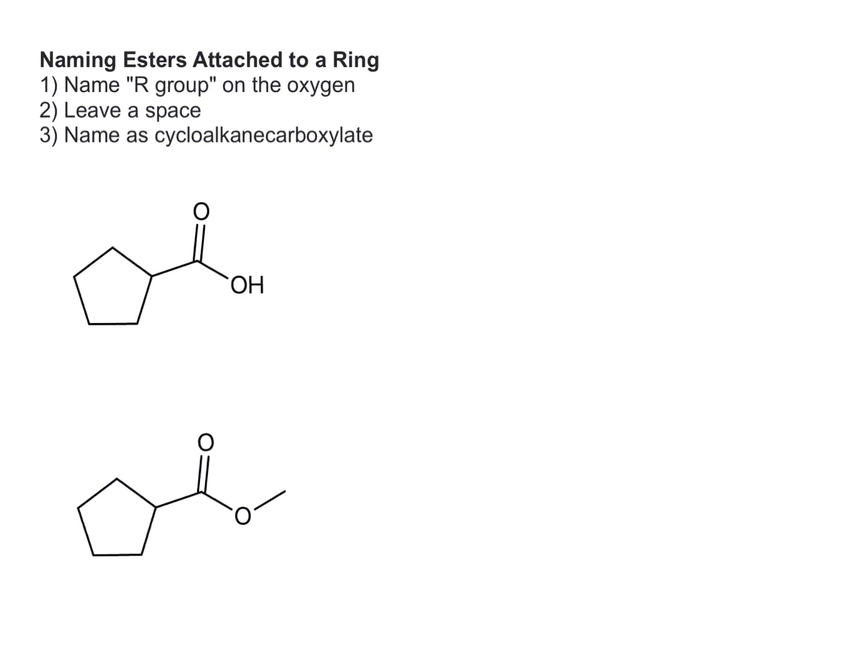The other type of situation you might have to deal with is having an ester attached to a ring. And the rules are very similar. We name the R group on the oxygen, leave a space, but now we name this as a cycloalkane carboxylate. So before we get into looking at the ester, let's first deal with just the carboxylic acid to review that.